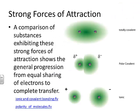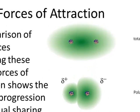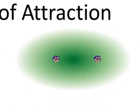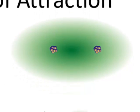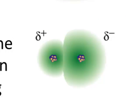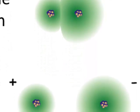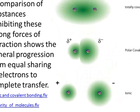When we compare substances exhibiting strong forces of attraction, we see a general progression: from equal sharing in a completely nonpolar covalently bonded substance, such as two of the same type of atom bonded together as shown in the top image; to less equal sharing in the middle image indicating a polar covalent bond, giving a separation of charge and creating slight positive and slight negative ends; to the lower image, where electrons have been completely transferred, giving an ionic compound with very strong forces of attraction between oppositely charged particles.